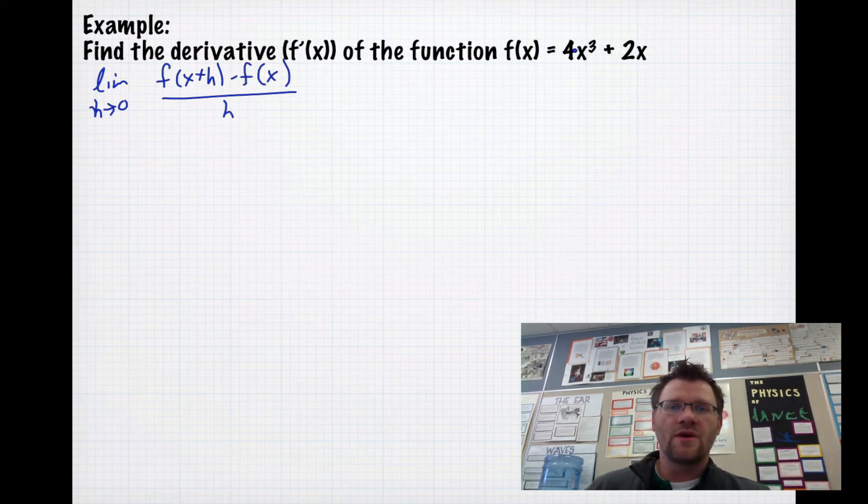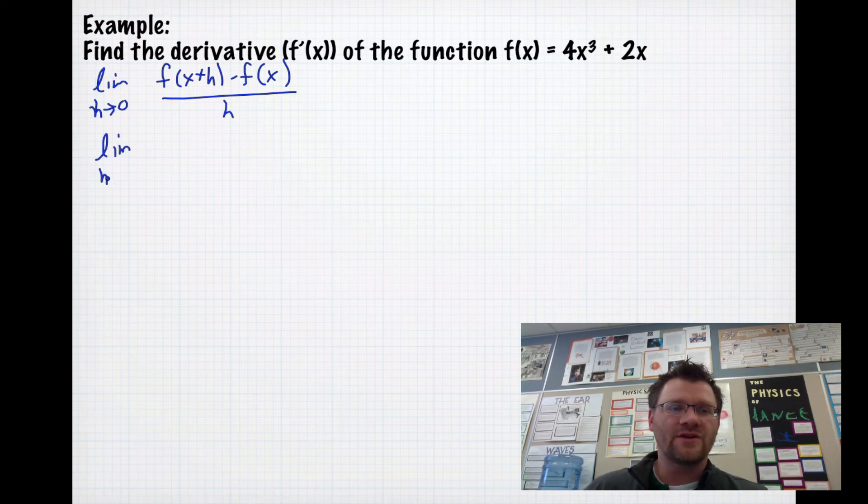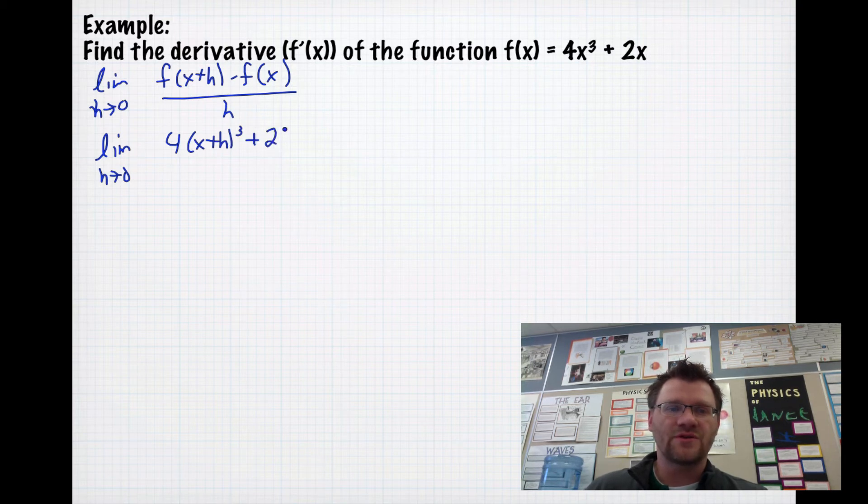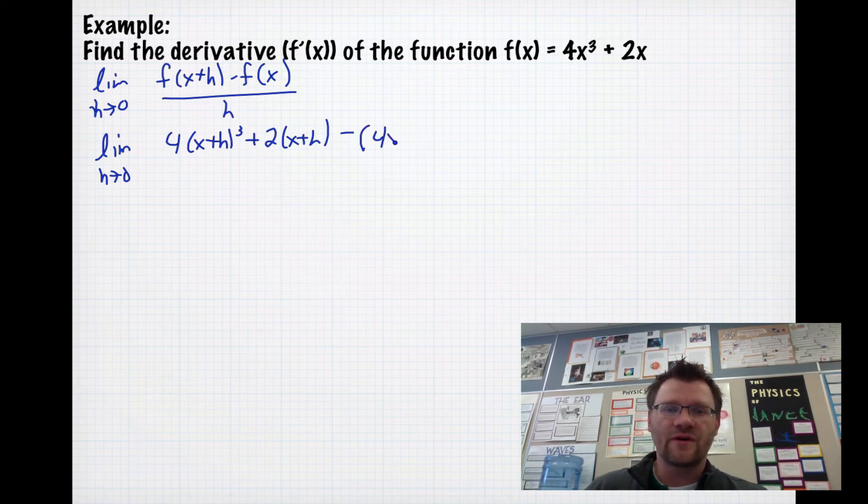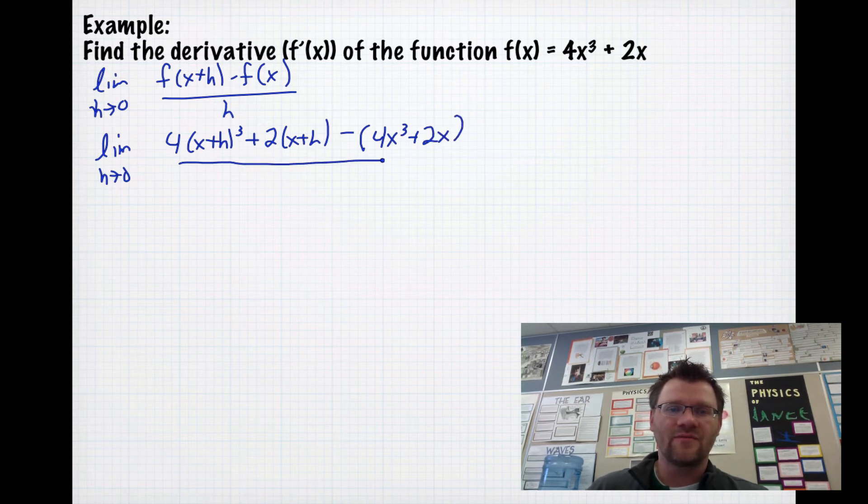We need to follow function notation, which says we're going to put x+h in instead of this x and that x. So we have the limit as h approaches 0 of 4(x+h)³ + 2(x+h). The important thing to remember is we need to subtract the original function, so we subtract 4x³ + 2x. A lot of people will forget to do that. Please don't do that because you need to get this question right.